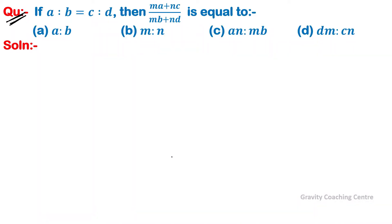The question: if a is to b equal to c is to d, then (ma + nc) upon (mb + nd) is equal to what? Given a upon b equal to c upon d.